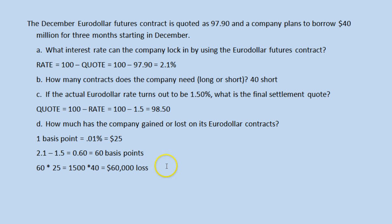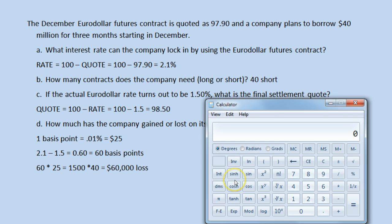So what has happened here? Euro-dollar futures contracts are used to hedge interest rate risk. They do so by allowing this company to lock in a particular interest rate, which happens to be 2.1 percent. The company has committed to borrow $40 million at 2.1 percent for one quarter of a year — three months — locking in a borrowing cost of $210,000.